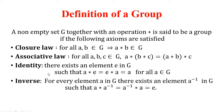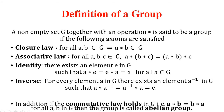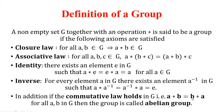If these four properties — closure, associativity, identity, and inverse — are satisfied by a set G with respect to a binary operation star, then G is called a group. Additionally, if G also satisfies the commutative property, that is a star b equals b star a for all a, b in G, then the group is called an abelian group. For example, a + b = b + a and ab = ba satisfy commutativity.